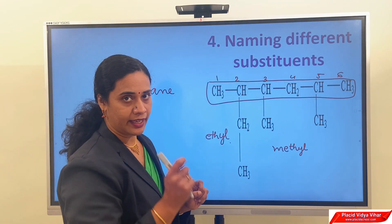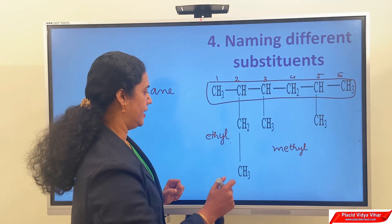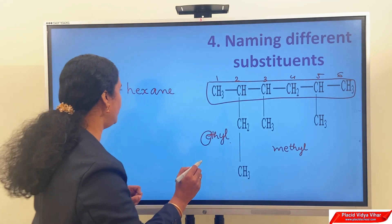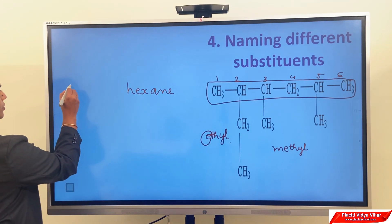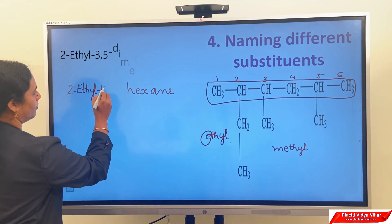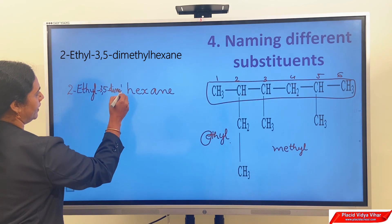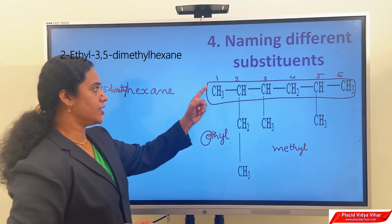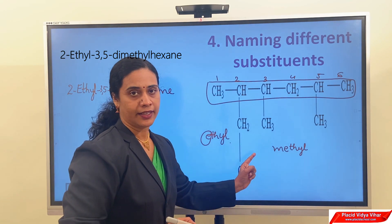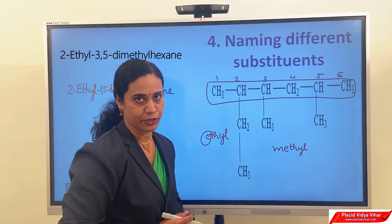Therefore, here we have to consider the alphabetic order. E comes before M. So the name of the compound is 2-ethyl-3,5-dimethylhexane. In the case of different substituents, we have to consider the alphabetic order along with the appropriate positions.